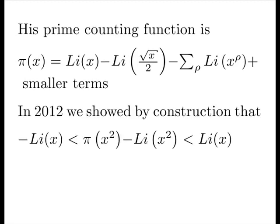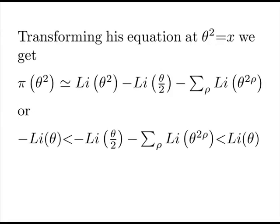In 2012, we showed by construction that the Riemann hypothesis was true, by proving that pi at x squared minus the log integral at x squared is absolutely less than plus or minus the log integral at x. Transforming Riemann's equation at theta squared equals x, we get the following transform, and it's amenable to something in our form in the geometry that we studied.